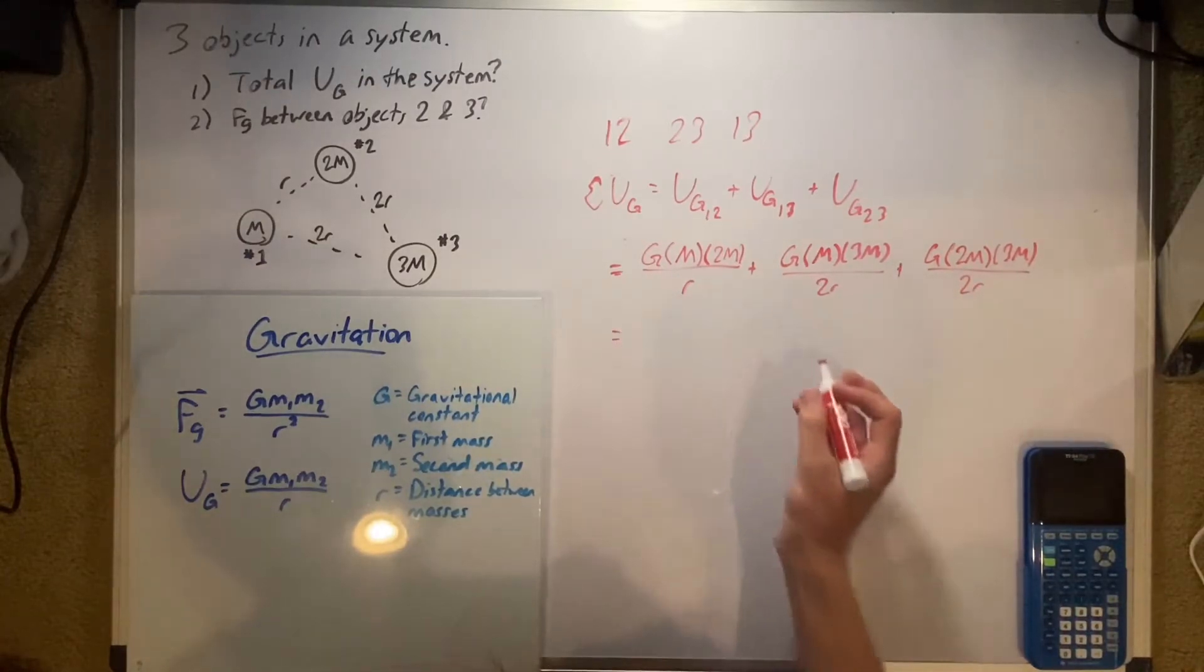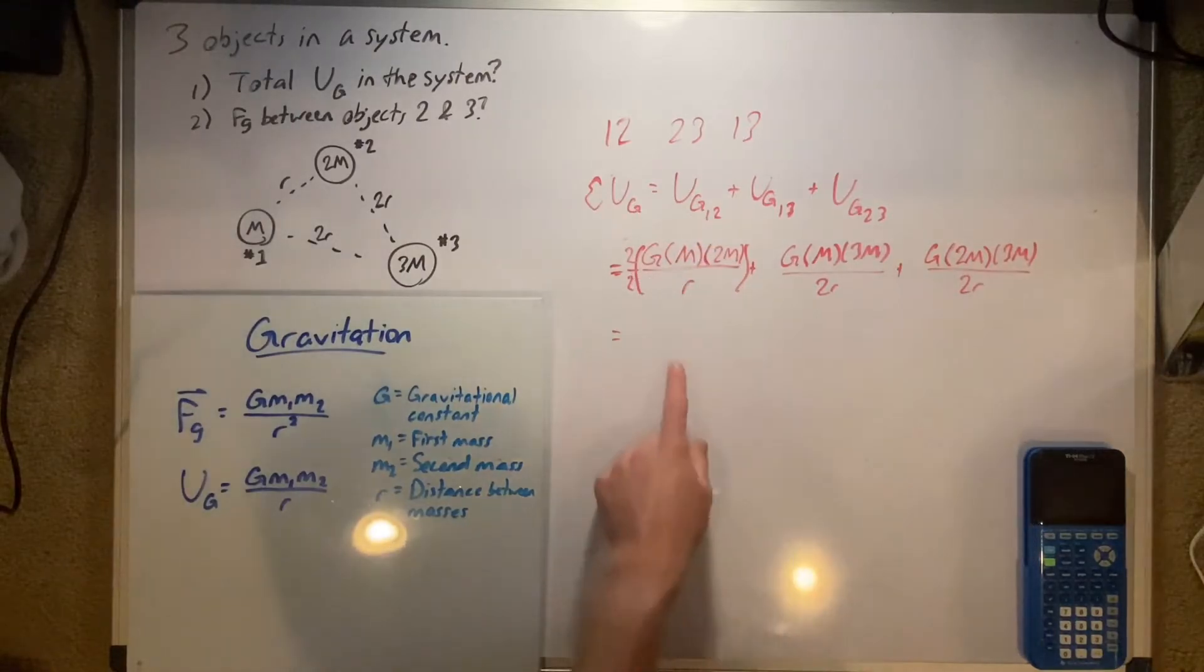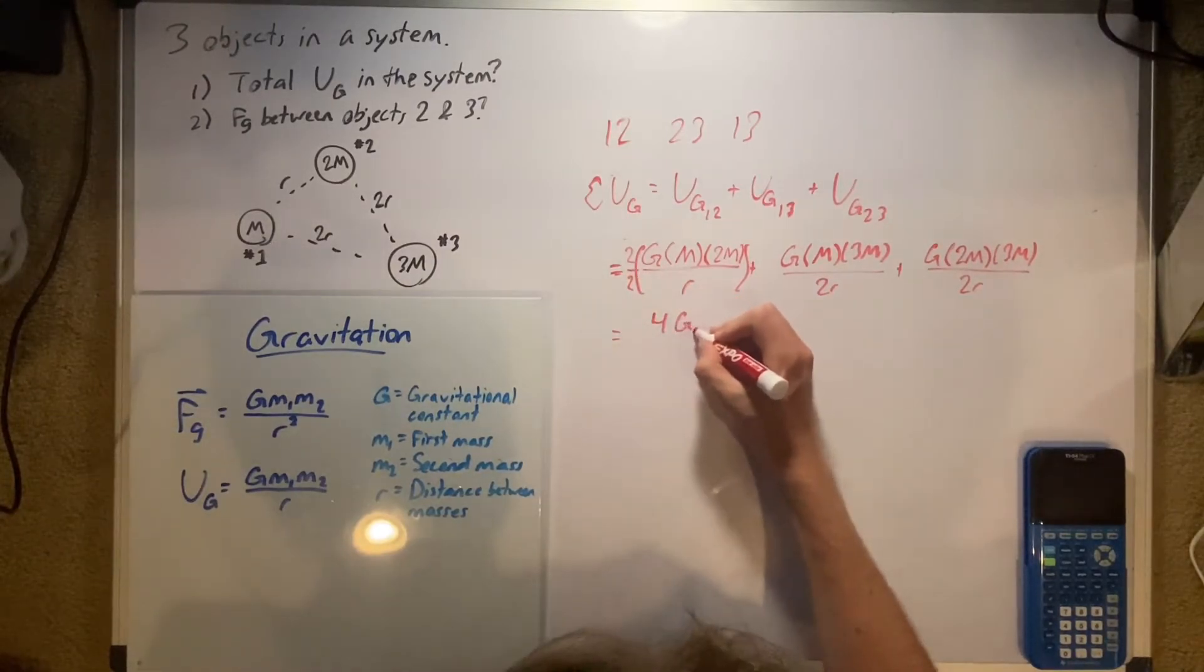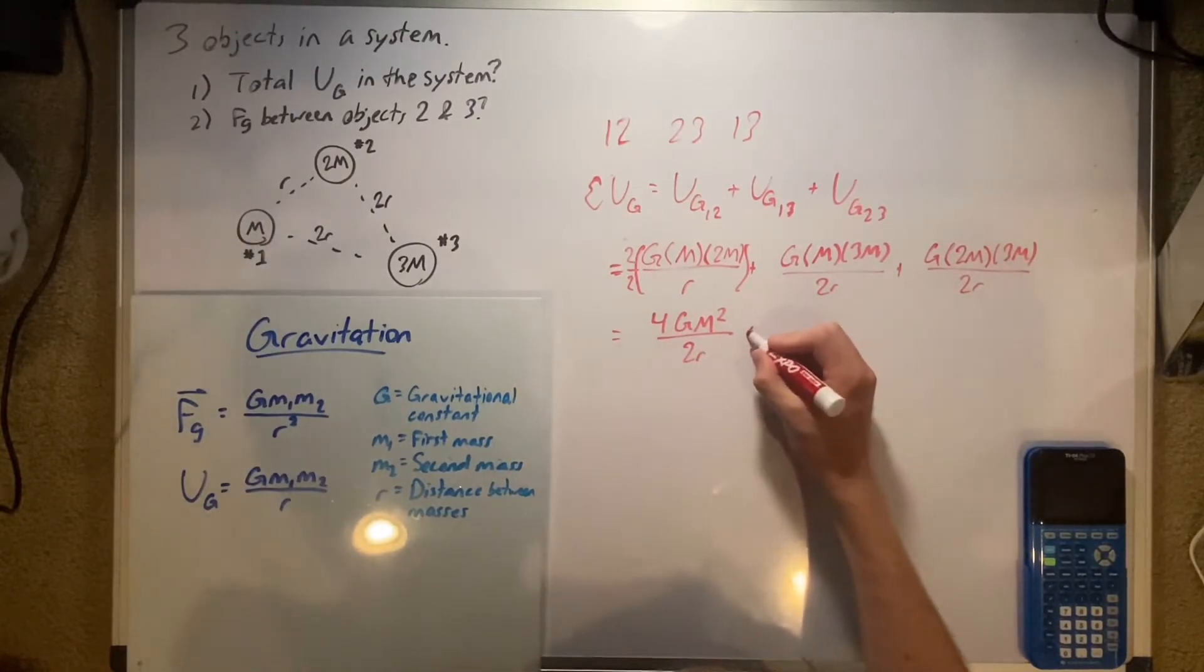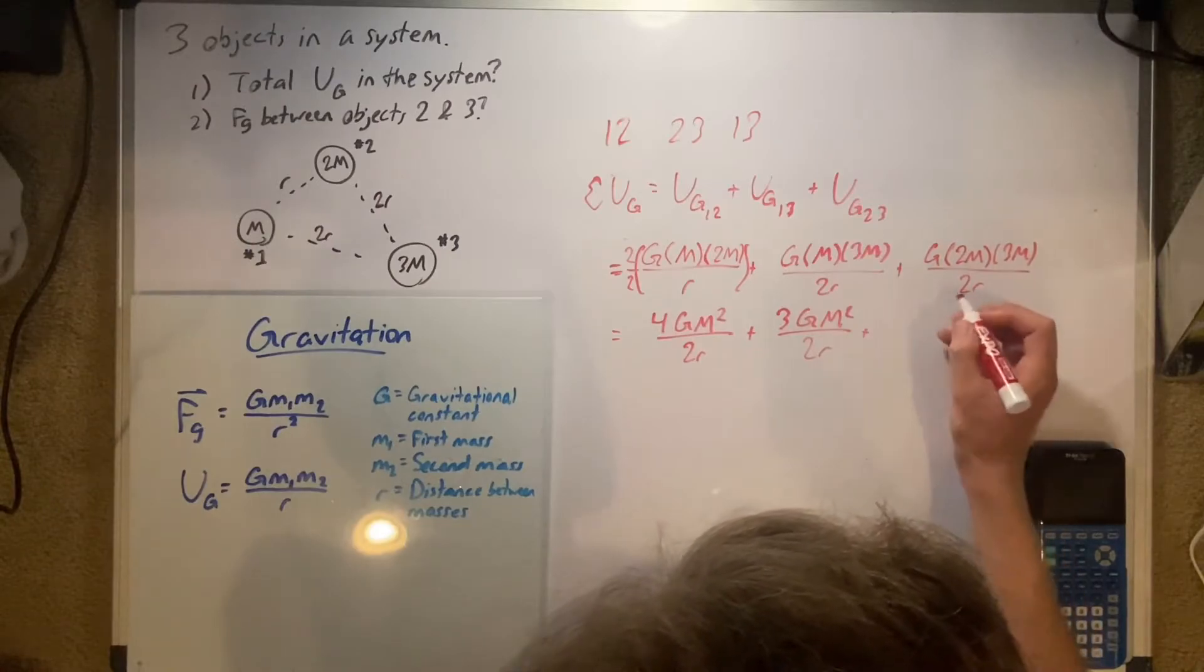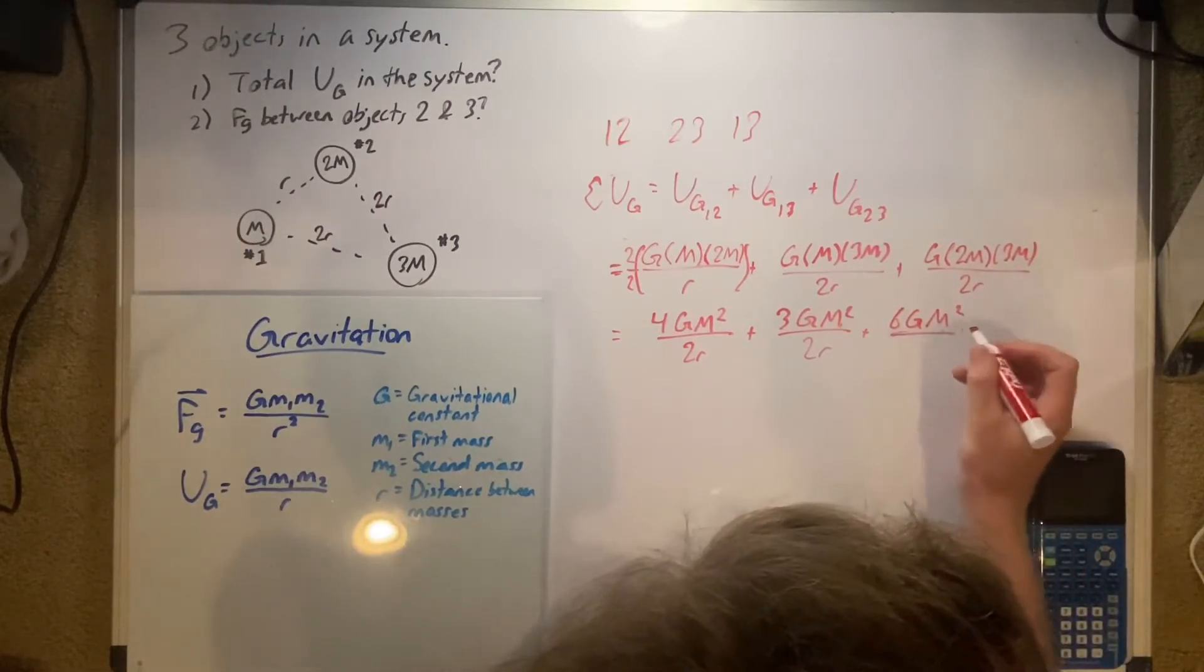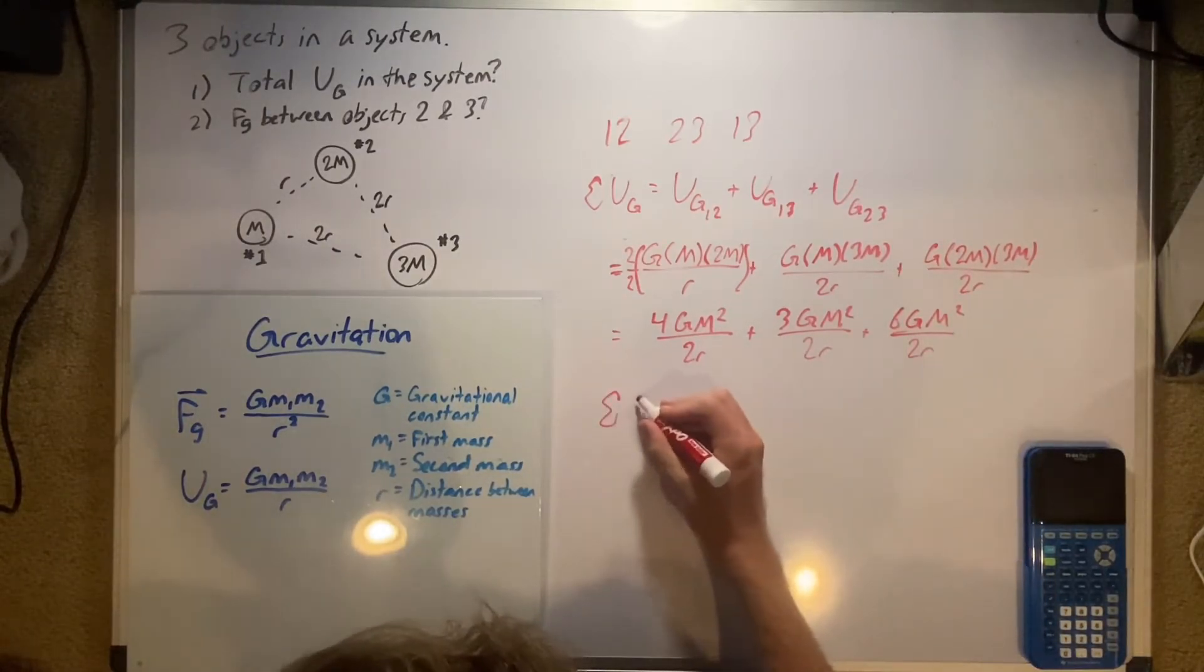And then we press equal again, multiply this entire thing here by two over two so we can get those denominators all rationalized. So here we have four, so four G M squared over two R, plus six G M squared over two R.